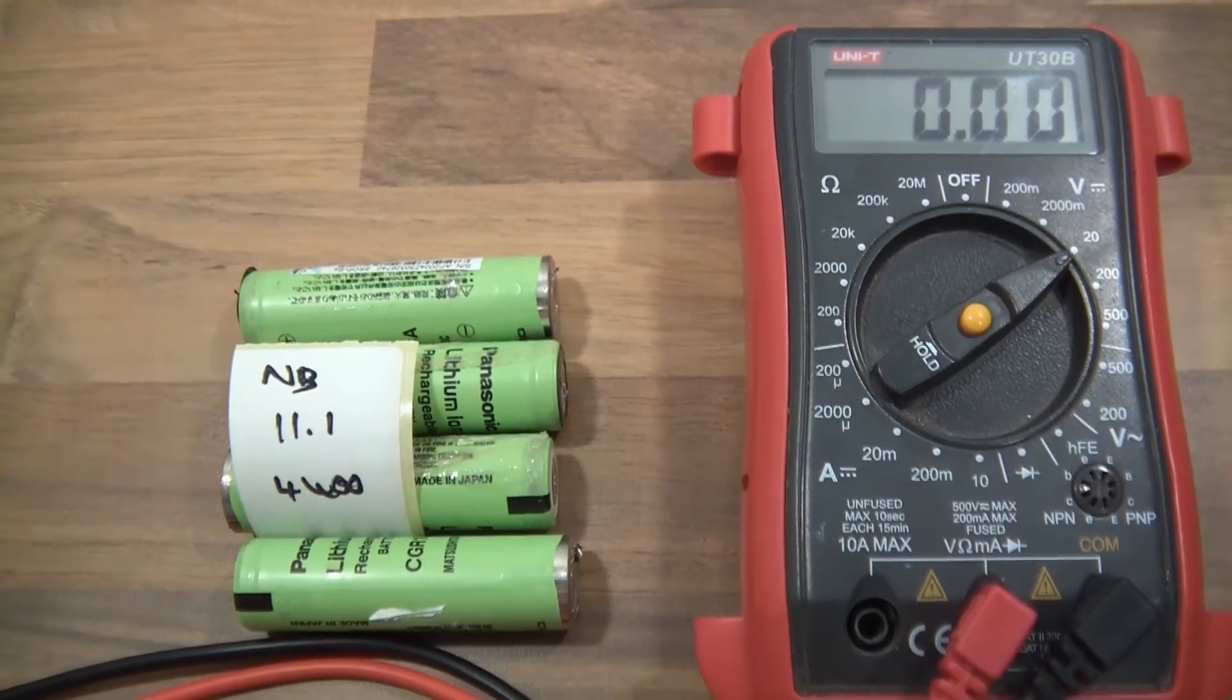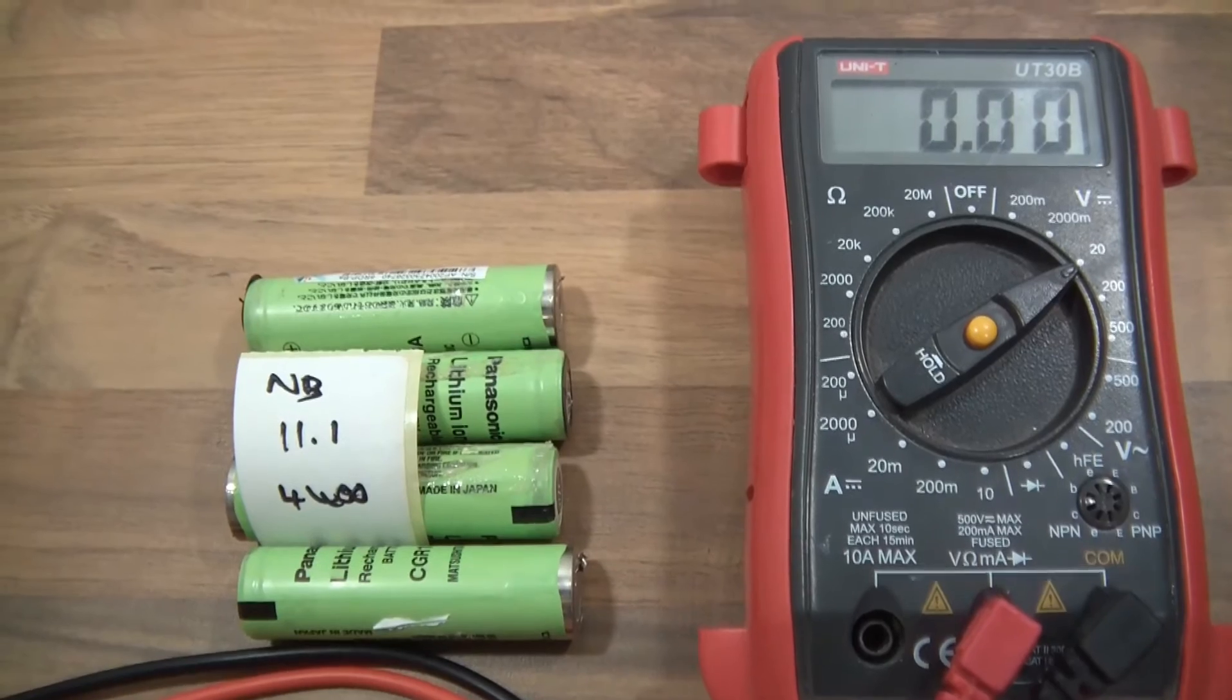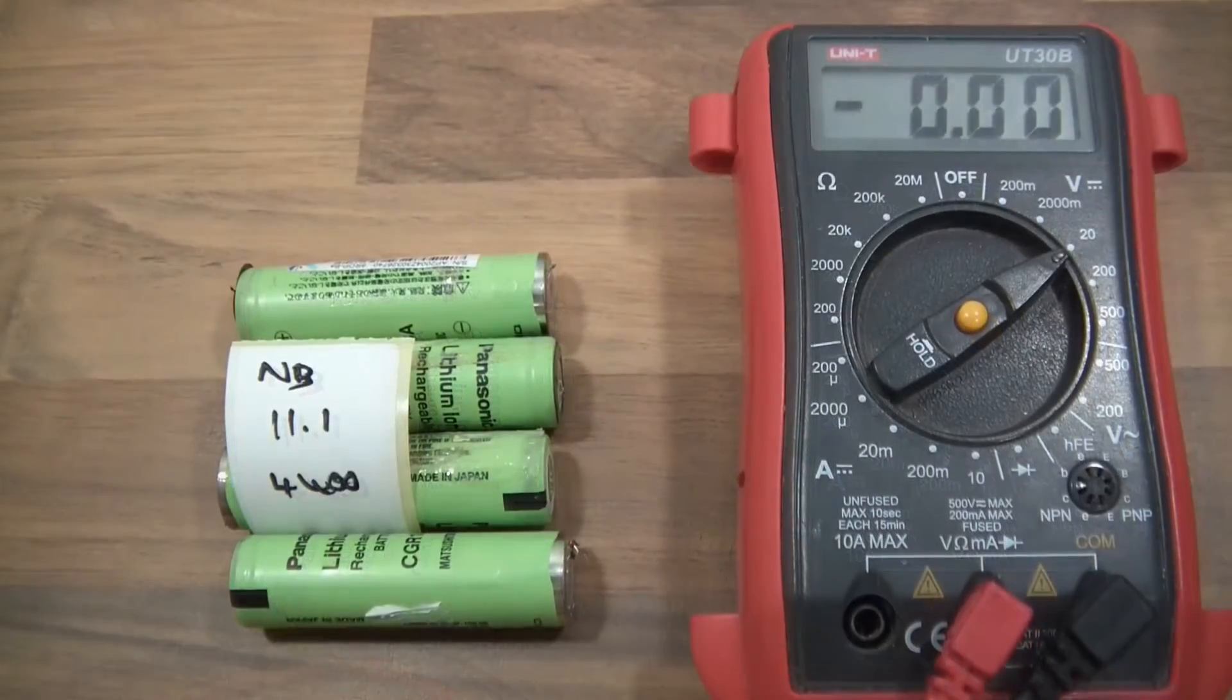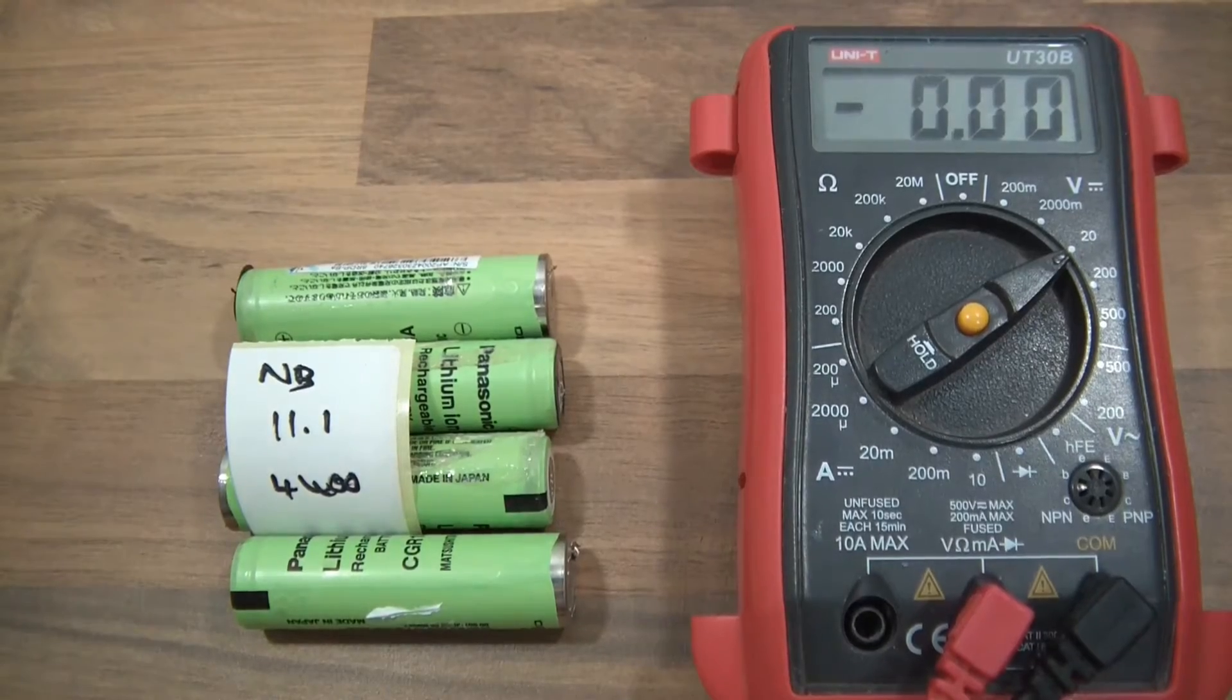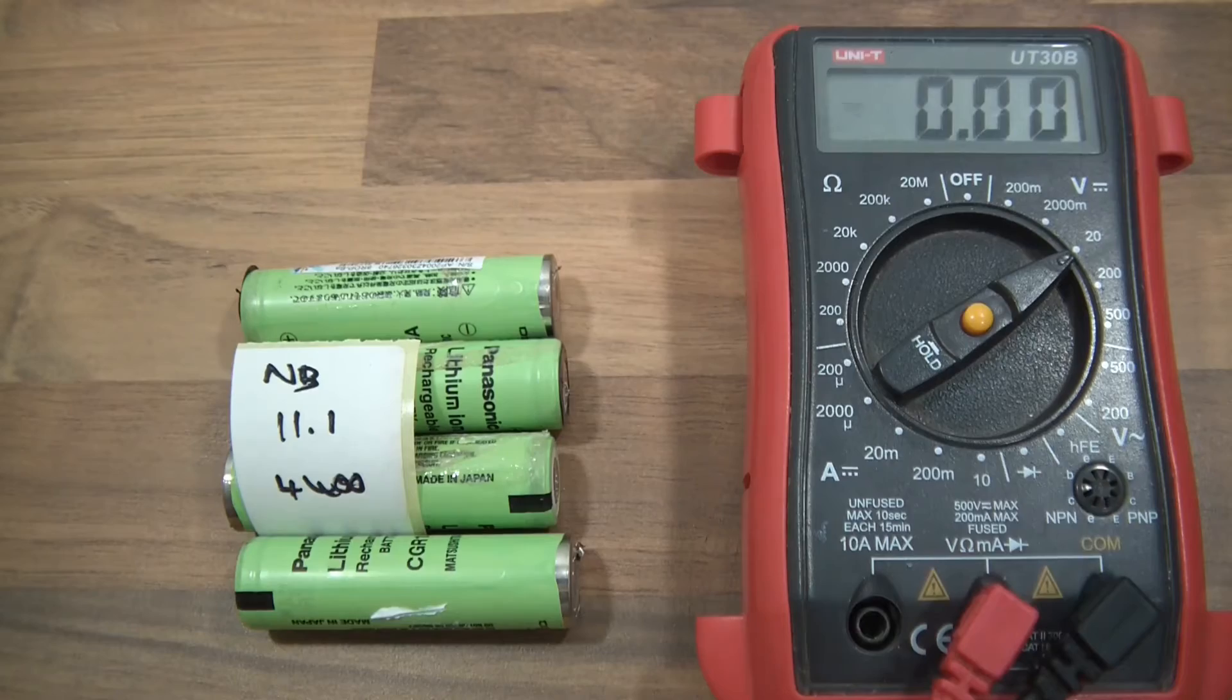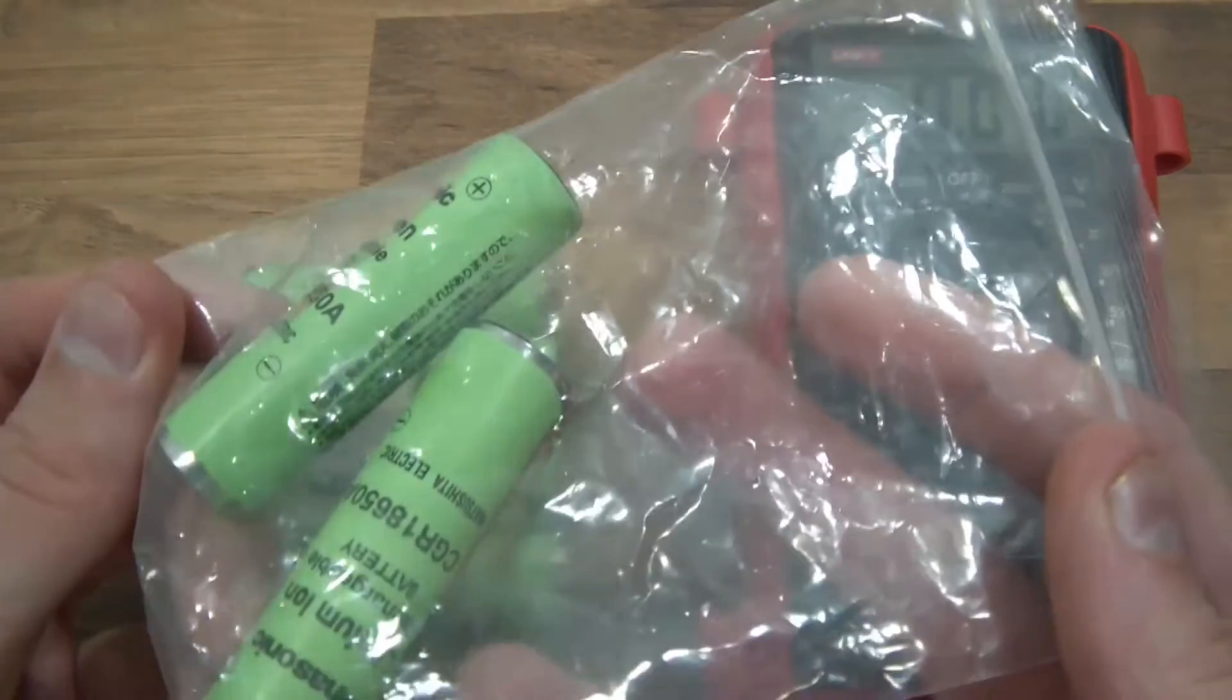It could be that these ones have just discharged, but discharging them that much can damage them. But anyway, these two are probably dead. What I'm going to do is, I'm going to separate these. So this bag here, this can be for completely dead ones, which I know these two are zero volts. Completely dead. Any completely dead can go in there.